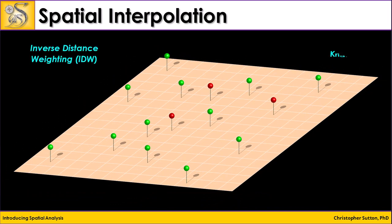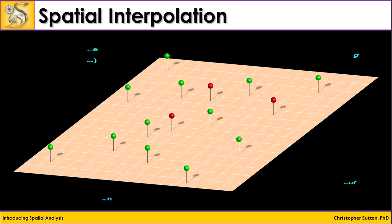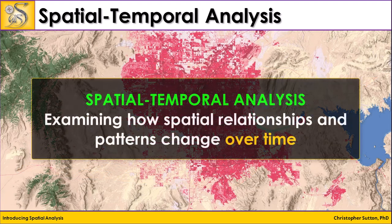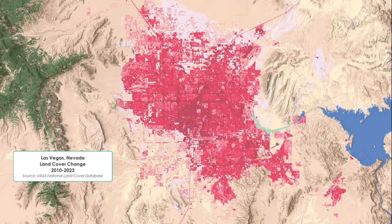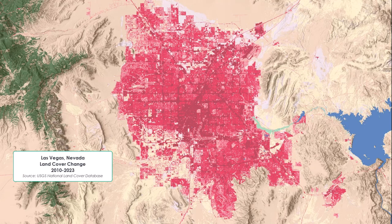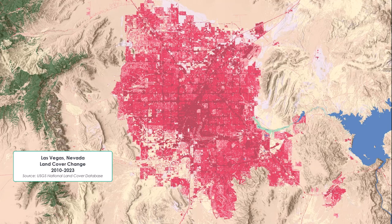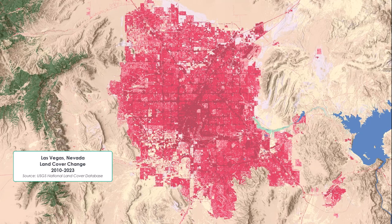There are several spatial interpolation techniques, and some common ones that you will use frequently in GIS. Spatial-temporal analysis is another common spatial analysis technique. We use it to understand and visualize how spatial relationships and patterns change over time. Here we have an animation showing urban growth in Las Vegas, Nevada. By examining spatial data over time, it helps us understand patterns that might not be evident from a purely spatial or purely temporal perspective.